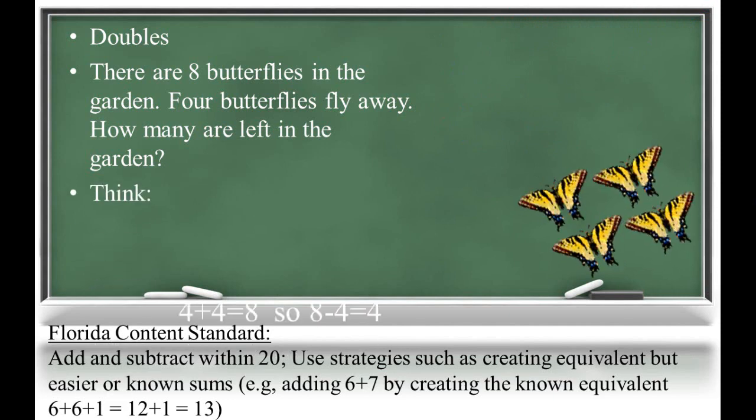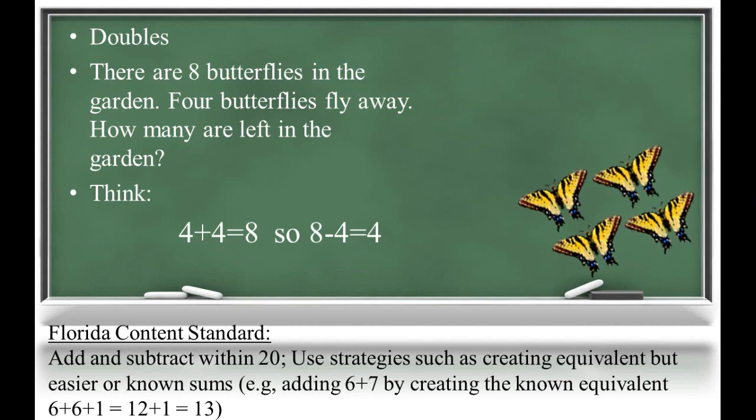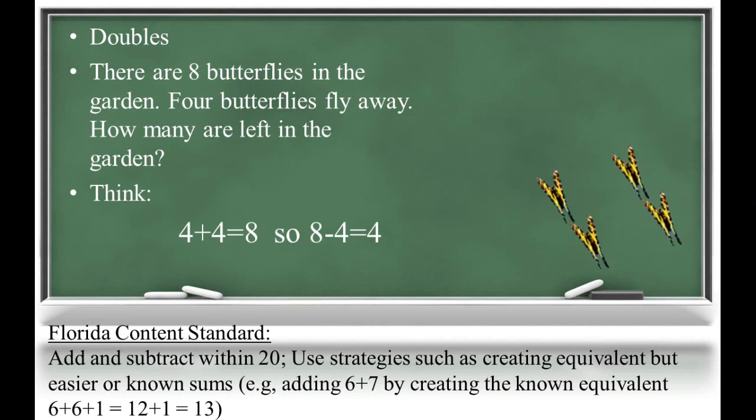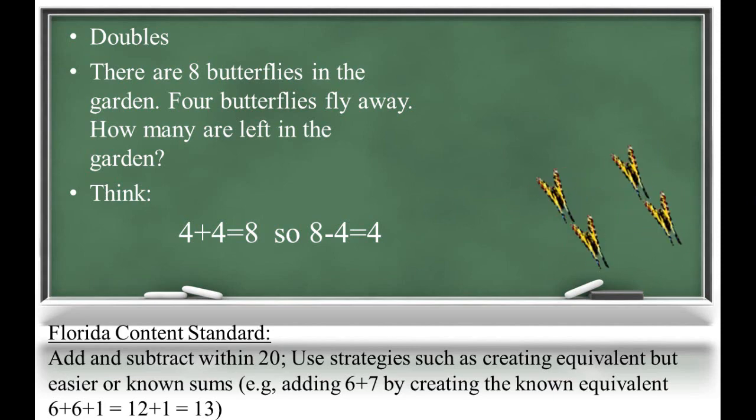So knowing the doubles fact, four plus four equals eight, allows us to see that when we subtract four from eight, the difference is still four. The two addends here can be thought of as halves. Thinking halves simplifies finding the difference for doubles subtraction.